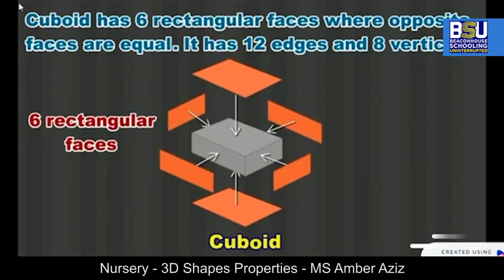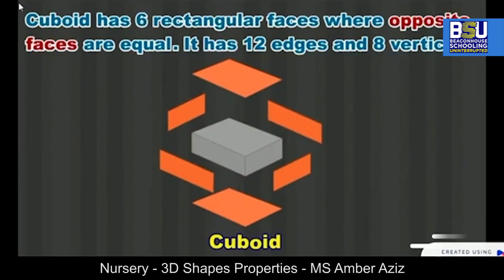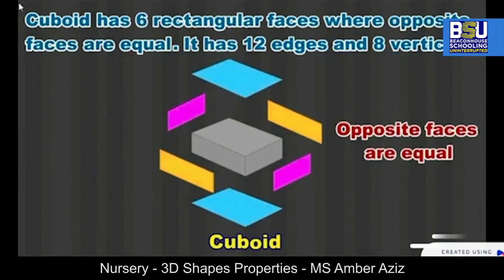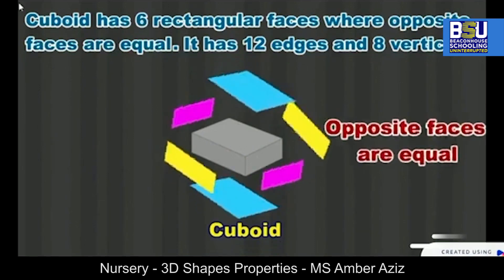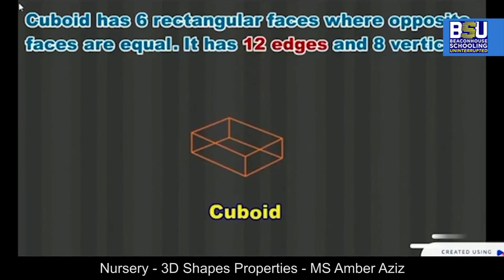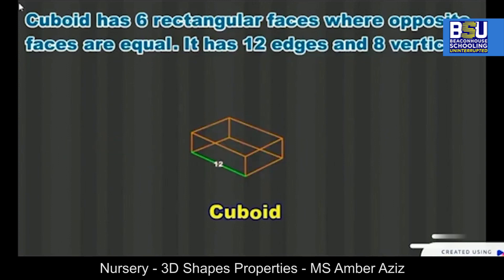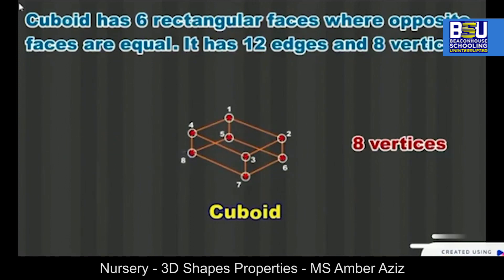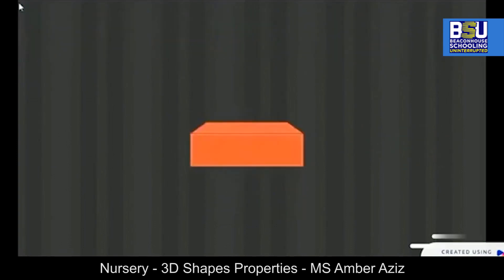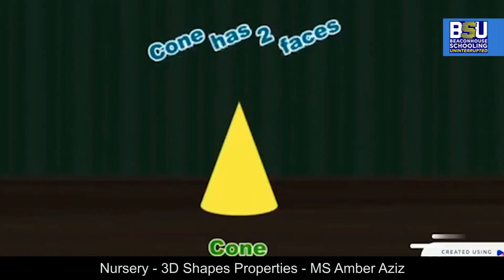Look at this shape. What shape is this? It's a cuboid. It has six flat faces — the opposite faces are equal in length. Have a look. Now look at the edges — it has 12 edges. And it also has eight vertices.